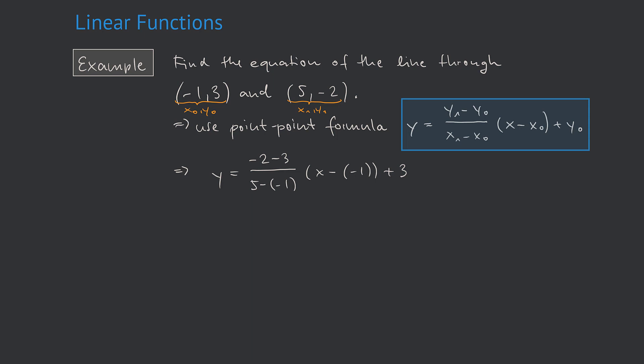First, we simplify this fraction. This is minus 5 over 6 times x, and I'll resolve these two minus signs, which is x plus 1 plus 3. And again, I want to resolve the brackets, which gives minus 5 over 6 times x minus 5 over 6 plus 3, and I want to simplify.